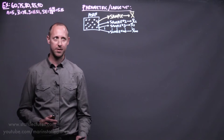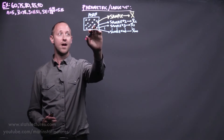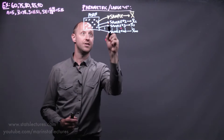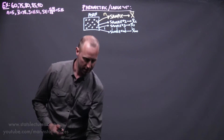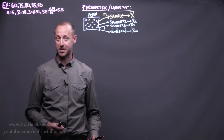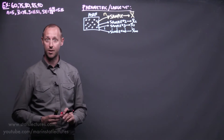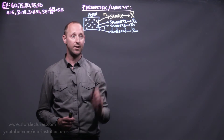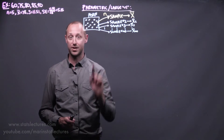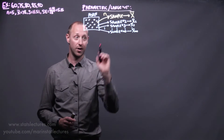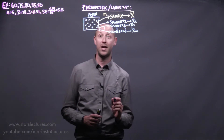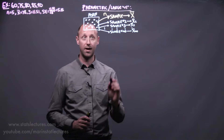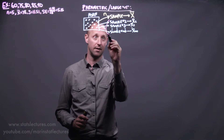We have the entire population and from them we draw a sample of n observations, and we use that to calculate our estimate. Here we're going to talk about the sample mean. In reality, we've only observed this one sample and got this one estimate, but we have this idea of a sampling distribution — this theoretical set of all the possible estimates we could get.